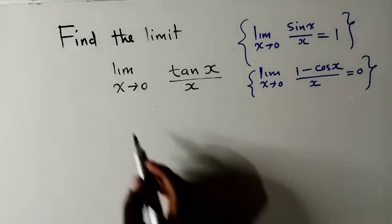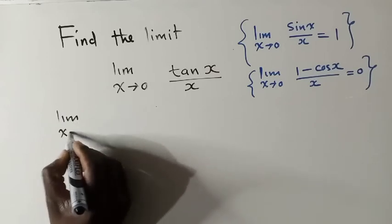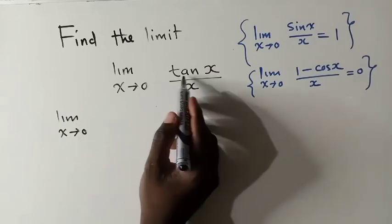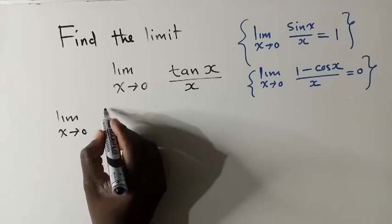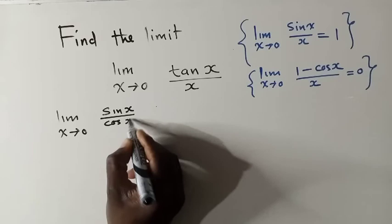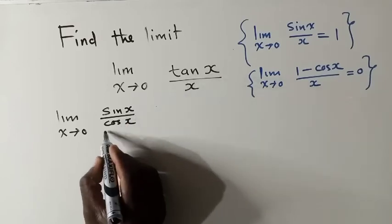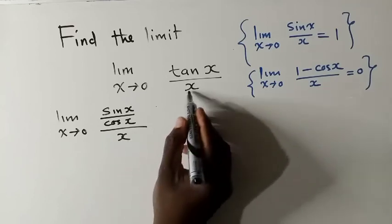So, what we're going to do is we'll say limit as x approaches 0. This will change it. It's the same as sin(x) over cos(x). So, tan(x) is the same as what I've just written over x, this x.